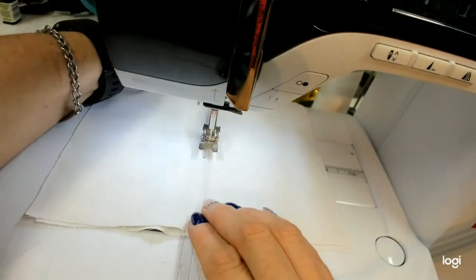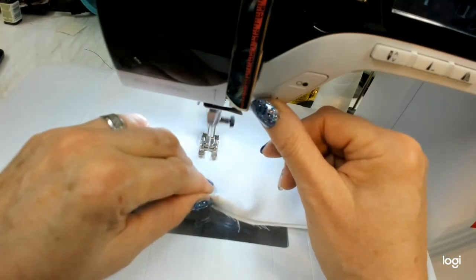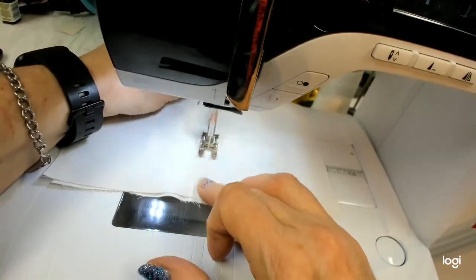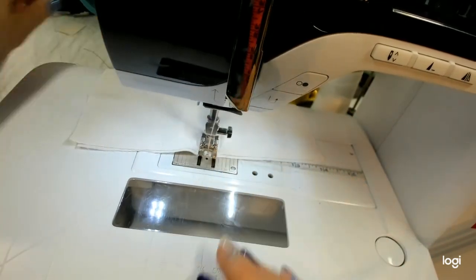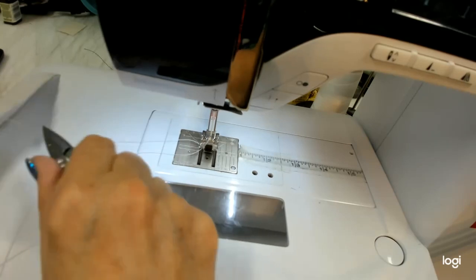Then you pull your piece out. Move it forward about a half an inch past your mark. Backstitch to the mark. Then move forward, backstitch, and that piece is done.